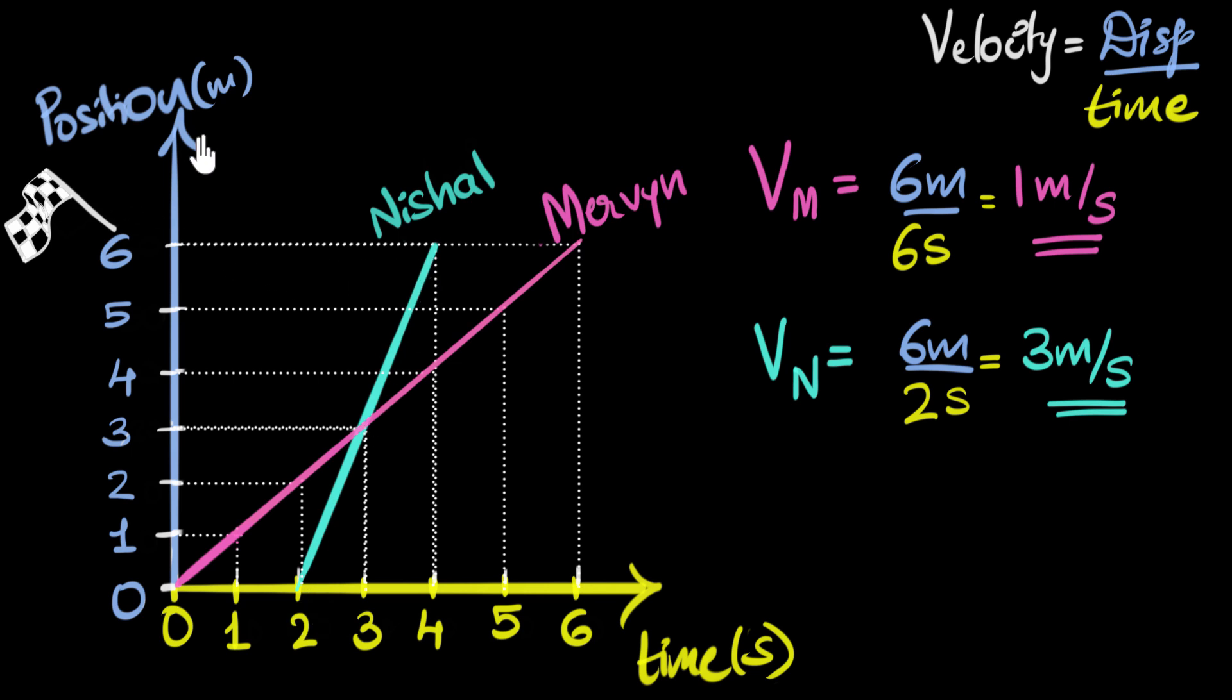So whenever position time graphs are straight lines, it means the position is changing uniformly. Every second, same amount of change, which means the velocity is a constant. On the other hand, if the graph was not a straight line, if it was some kind of a curve like this, then we would see the position won't change uniformly. And that means the velocity is not a constant. And of course, you have spoken a lot about this in previous videos. So if you need more clarity, great idea to go back, watch those videos, and then come back over here.